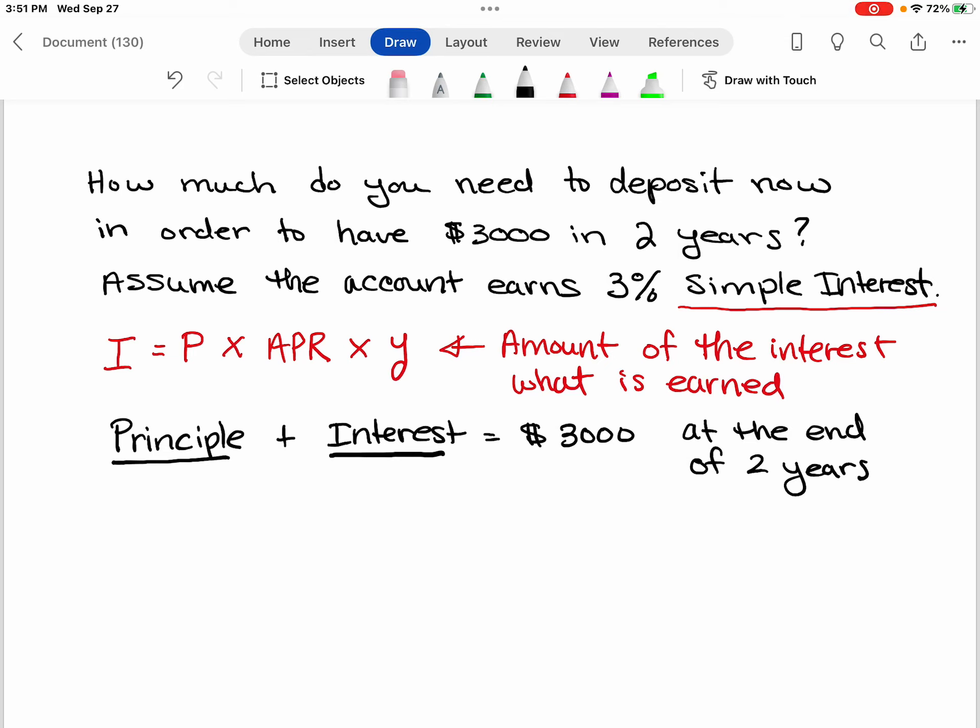I'm just going to label the principal as P. I know that the principal plus the interest, which is right here, the interest for a simple interest is the principal times the APR times the number of years. That will give me the interest, and I want that to total $3,000.